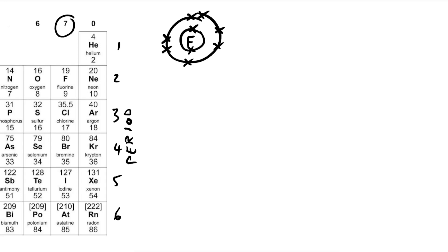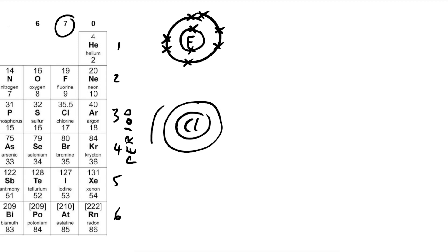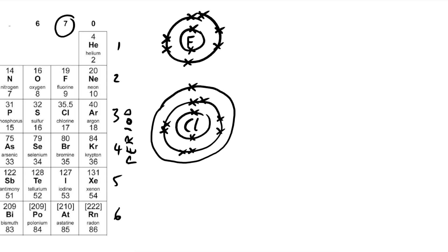Let's draw chlorine. It's in period three so it has three shells: two in the first shell, eight in the second shell, and then seven in the outer shell.